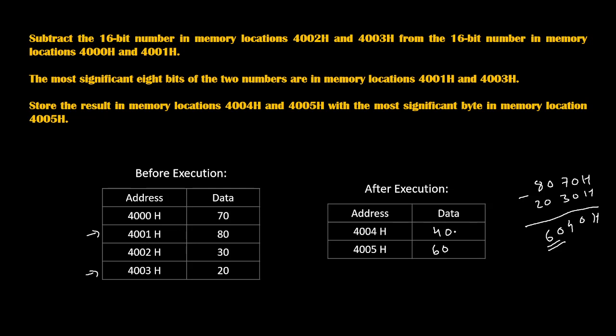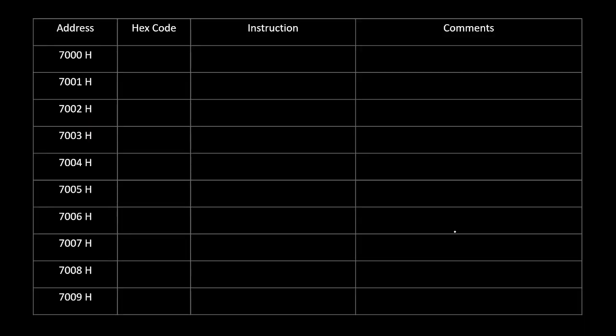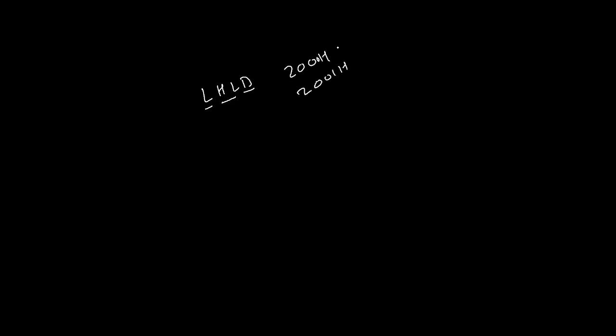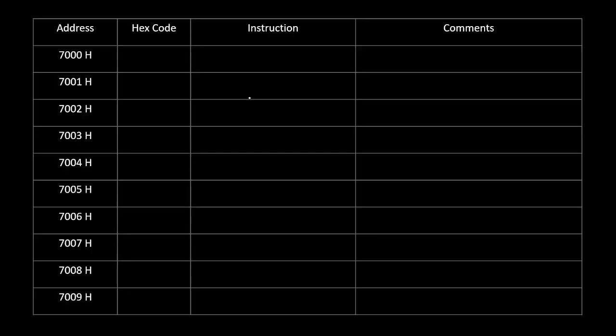This is our overall program. To solve it, we will start with the LHLD instruction. LHLD stands for Load HL Pair Direct. For example, the instruction LHLD 2000H copies the content of memory location 2000 into the L register and the content of 2001 into the H register. We will start our program by writing LHLD 4000H.